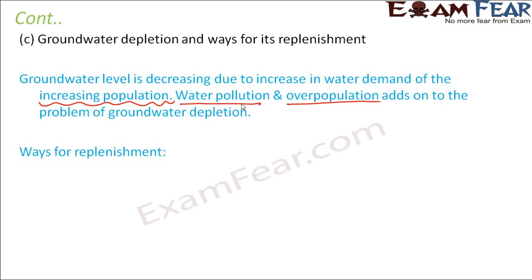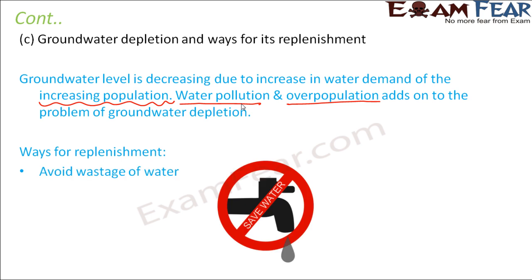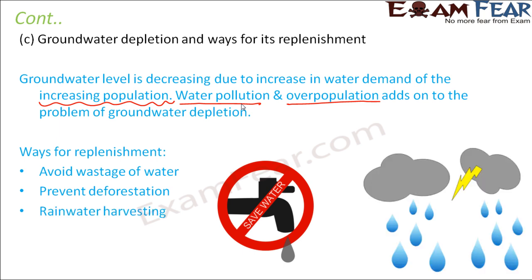Some ways to replenish groundwater include: avoiding wastage of water so we can judiciously use what is available; preventing deforestation, because roots of plants hold soil together and prevent water from flowing away unnecessarily; and rainwater harvesting, so that rainwater can be utilized for useful purposes, saving some groundwater.